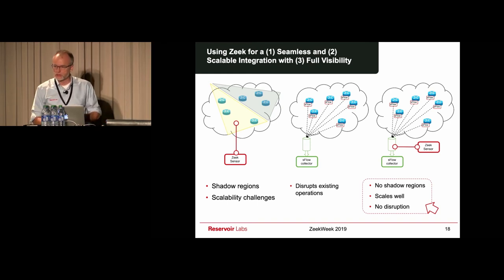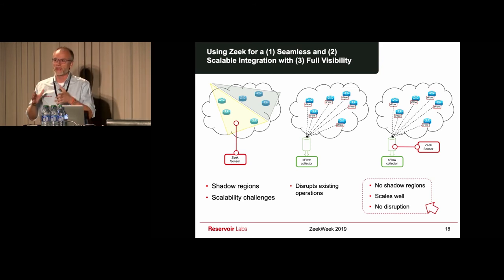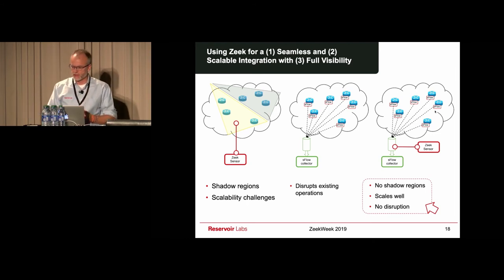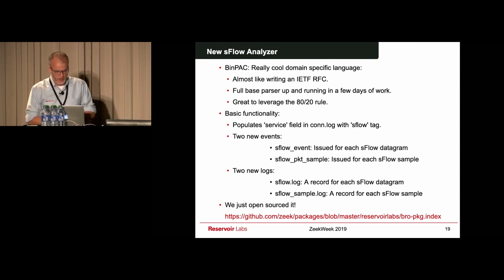Yet a third way to do this would actually be to do both at the same time. Yeah, you can leverage the existing infrastructure, say sFlow or NetFlow, but then you connect Zeek, but you're installing Zeek to only look at the sFlow traffic, so you avoid the shadow regions problem, and it's non-disruptive in that you're passively looking at traffic without interfacing with the collector, and it scales well because the sensor is just looking at sFlow traffic. So this is the third scenario we're looking at.